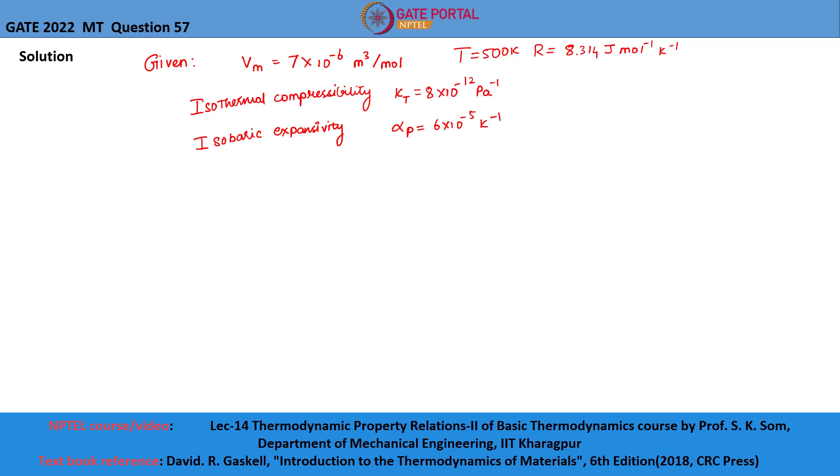Let me briefly explain what isothermal compressibility and isobaric expansivity means. Isothermal compressibility kappa T is given by the formula minus 1 by V multiplied by dV by dP at constant T. This isothermal compressibility represents the fractional change in volume of a substance with respect to pressure at constant temperature.